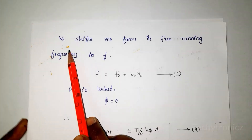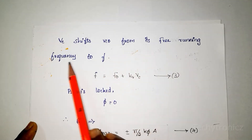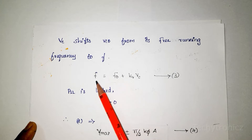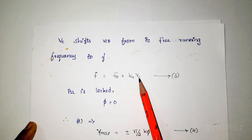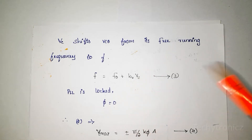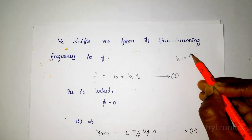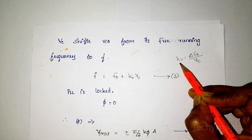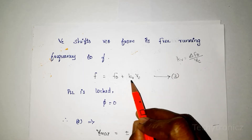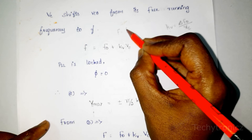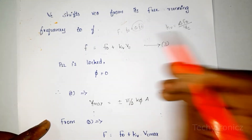The control voltage shifts the VCO from its free running frequency F0 to F. This depends on the conversion factor KV, where KV = ΔF0 / VC — the ratio between the change in free running frequency and the control voltage. So F = F0 + ΔF0, where ΔF0 = KV × VC.